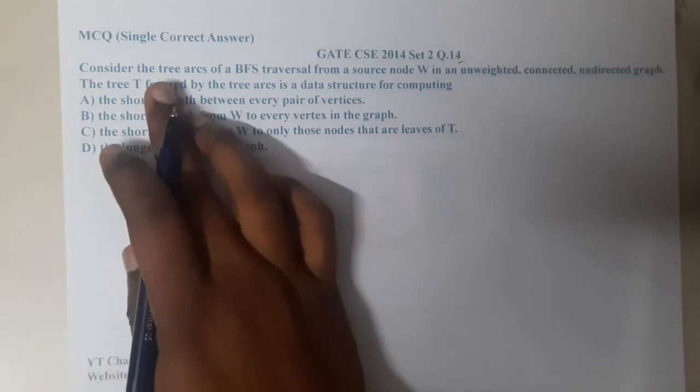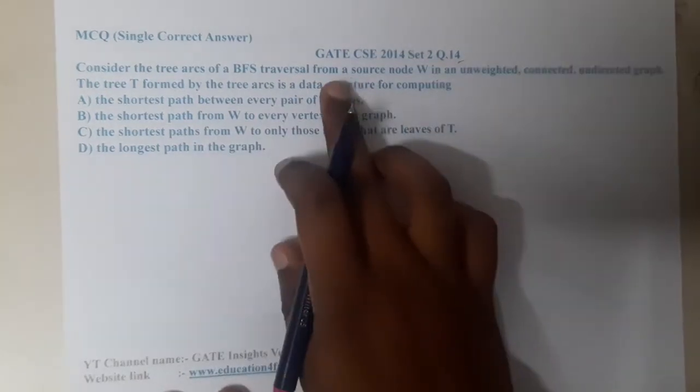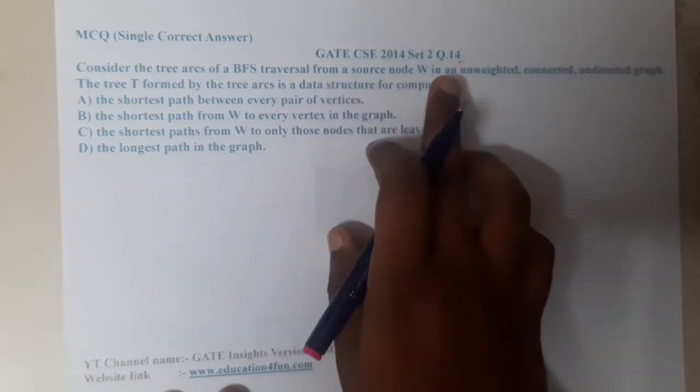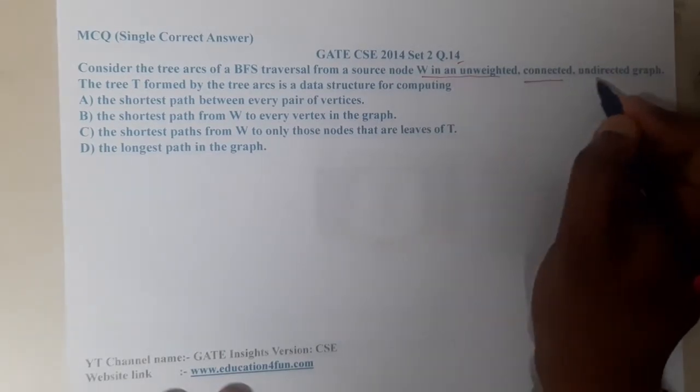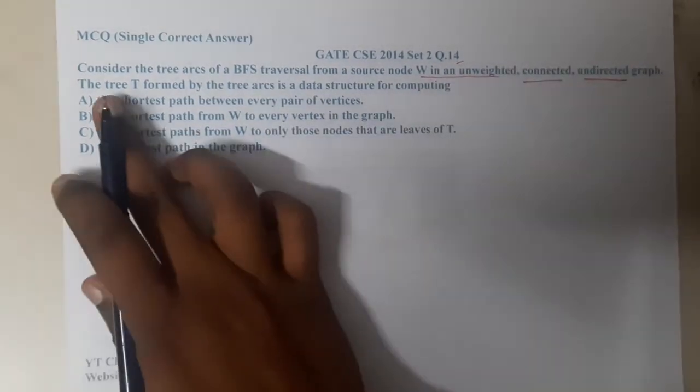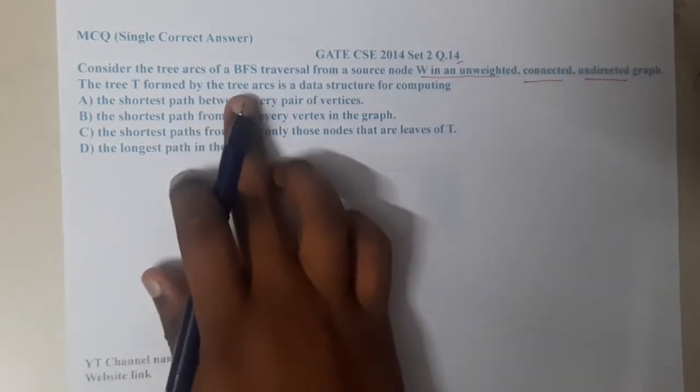Consider the tree arc of a BFS traversal from the source node W in an unweighted, connected, and undirected graph. The tree T formed by the tree arc is a data structure for computing...